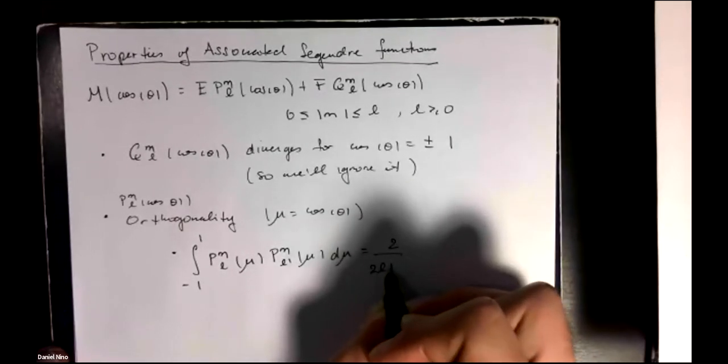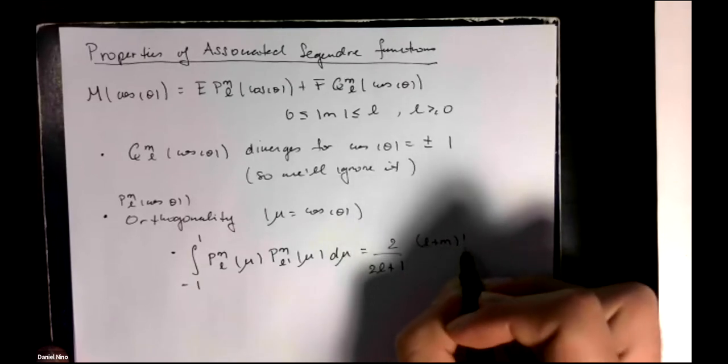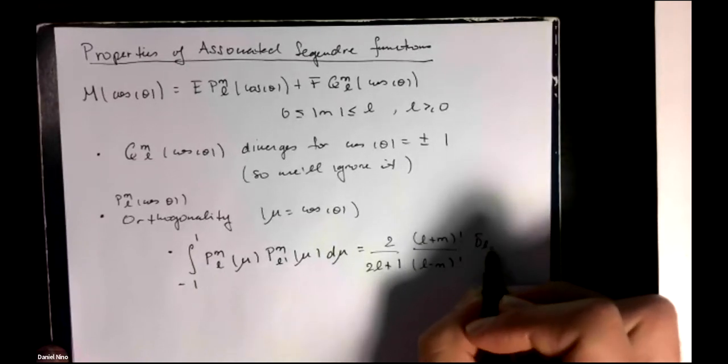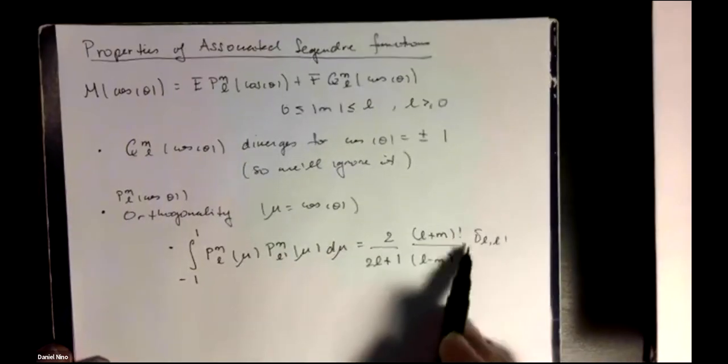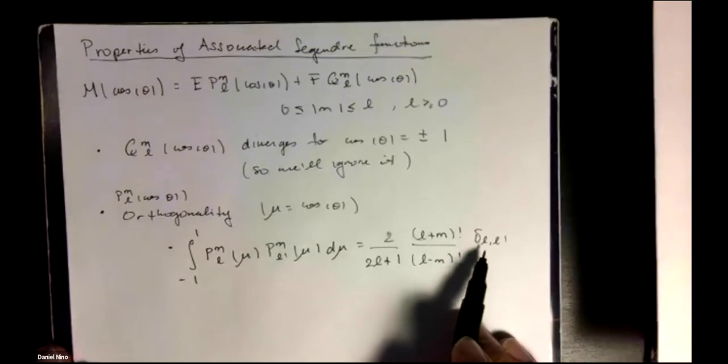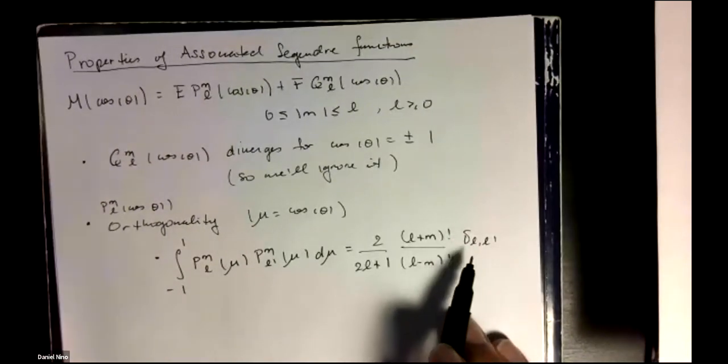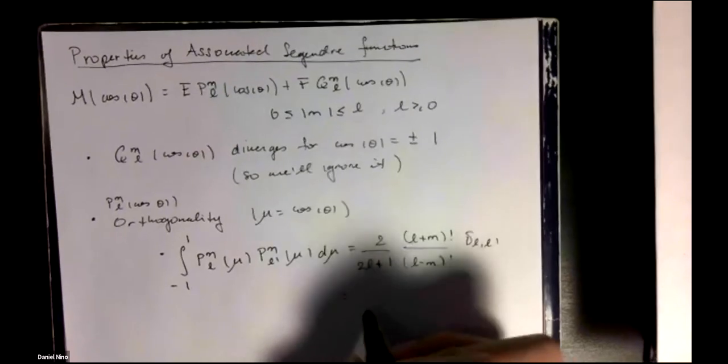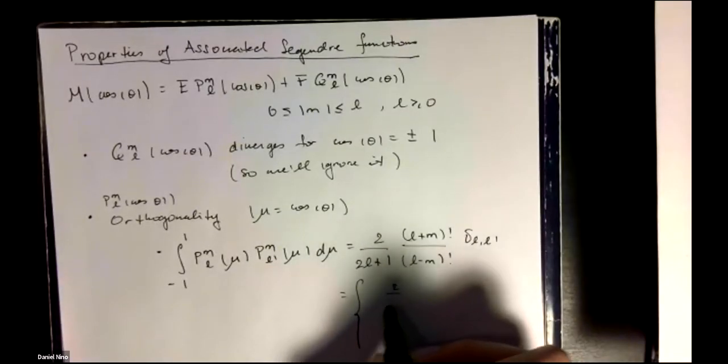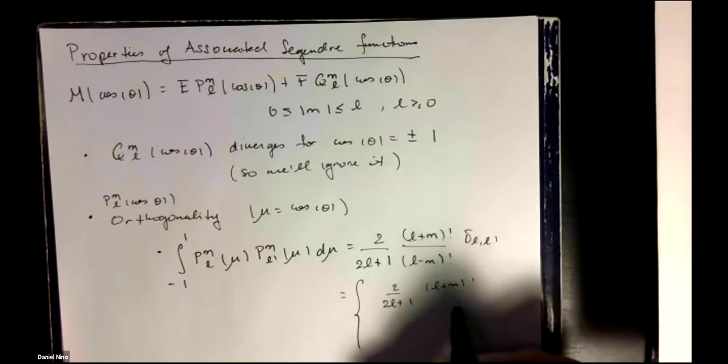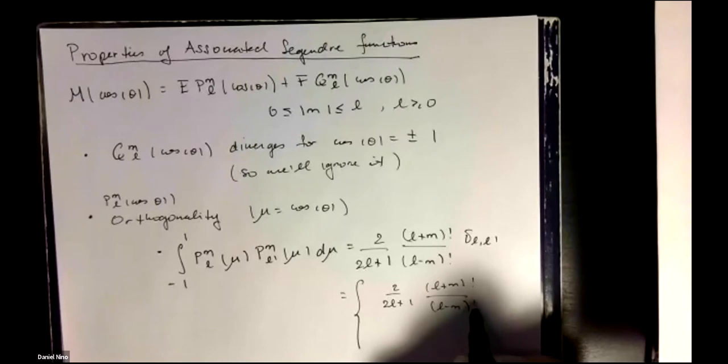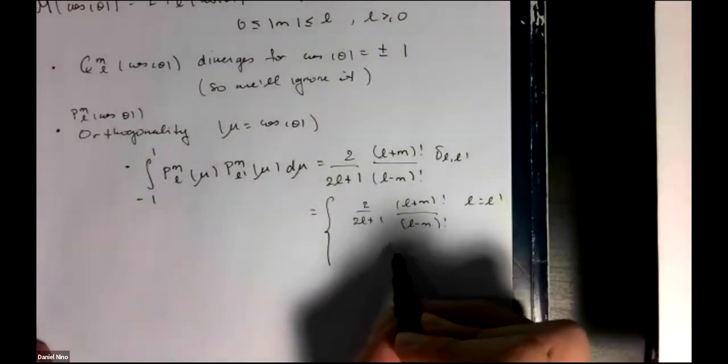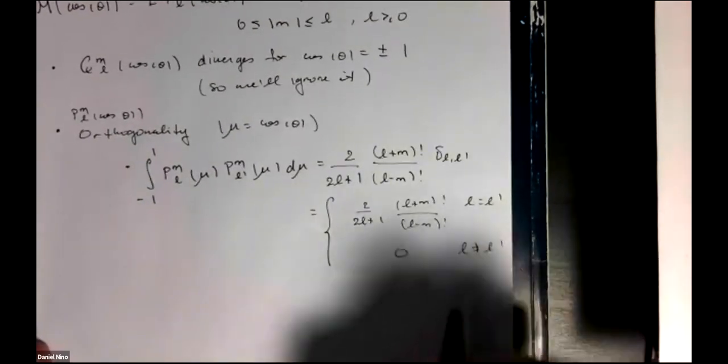This is equal to the following expression. Okay, so you have some numerical factors, essentially. And you have this Kronecker delta that kills any term when l is not equal to l prime. So it's equal to this numerical factor when l is equal to l prime and is equal to 0 when they're not equal.